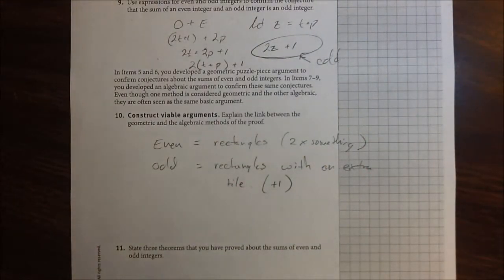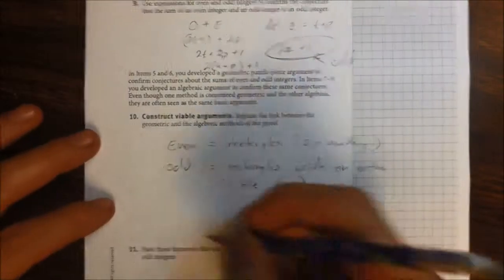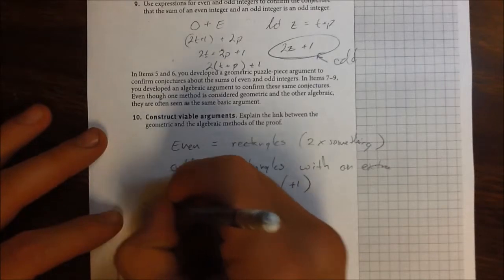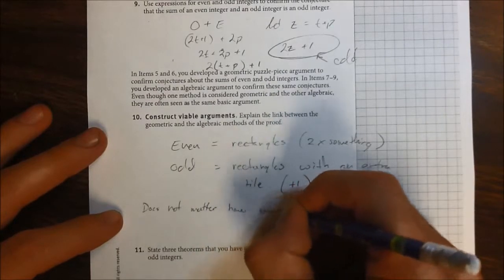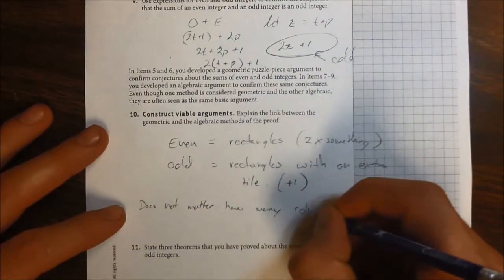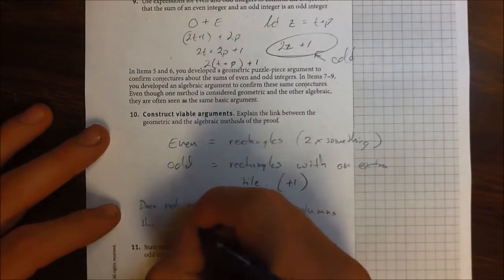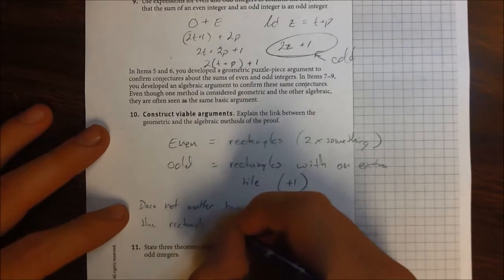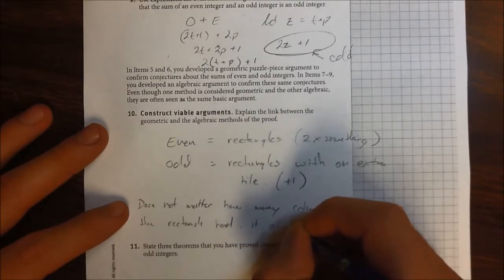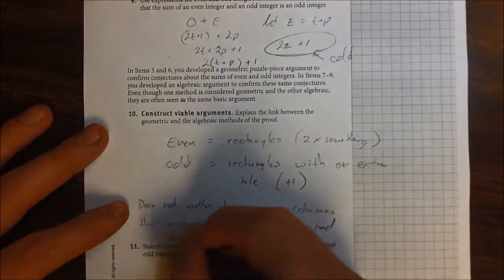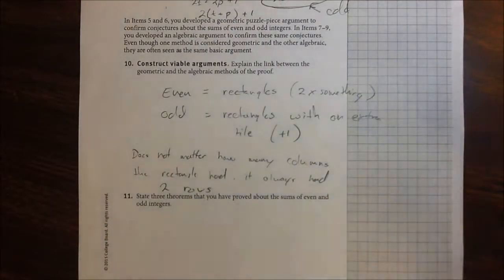Some of the things that I wrote down, some of the things that says it does not matter how many columns the rectangle had. It always had two rows. So in the end, it was two times however many columns you had.